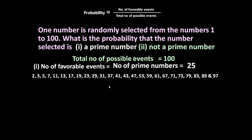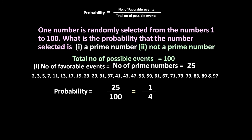There are 25 prime numbers from 1 to 100 — these are the favorable events. So probability = 25 upon 100, which equals 1 by 4. So if we pick any one number from 1 to 100, the probability that it will be a prime number is 1 upon 4.